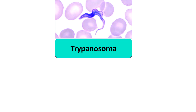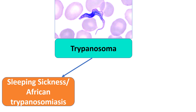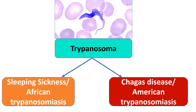Trypanosoma's typical morphology is shown in the image here. You can see there is a flagellum which is folded along the undulating membrane. Trypanosoma causes two diseases: sleeping sickness, which is endemic in Africa and also called African trypanosomiasis, and Chagas disease, which is endemic in South America and hence called American trypanosomiasis.